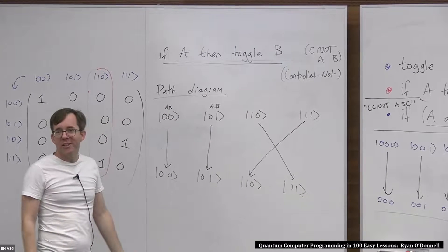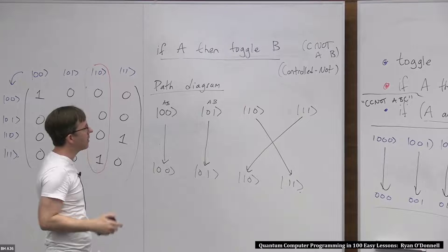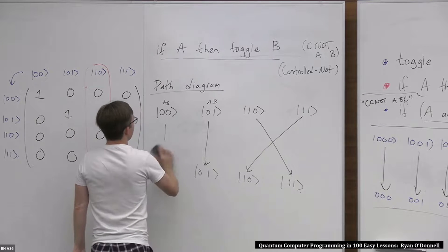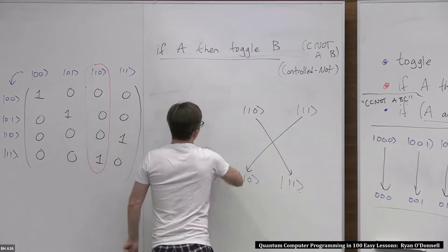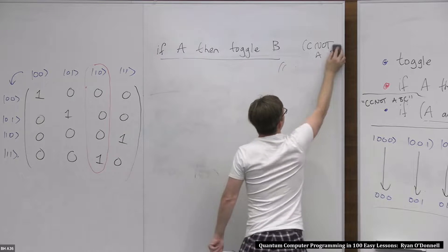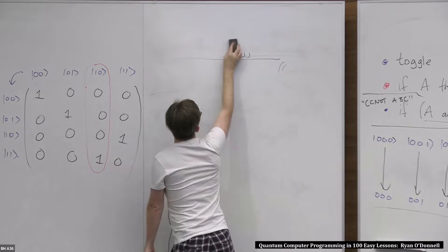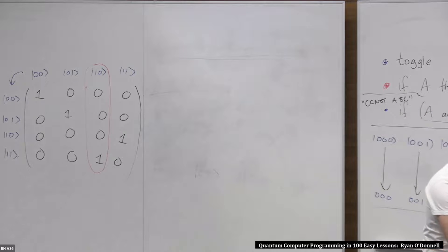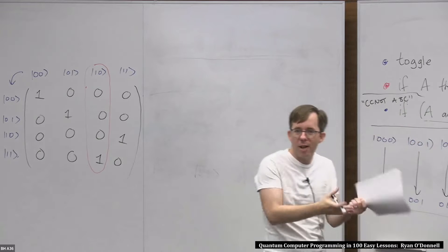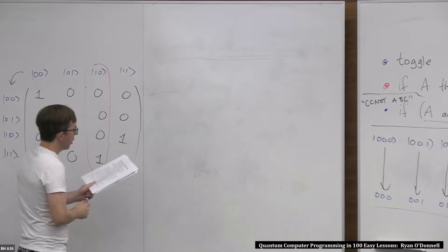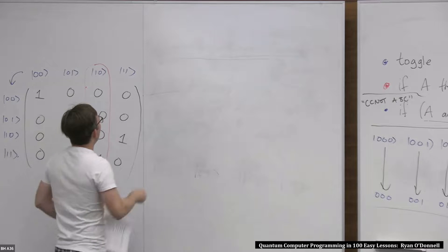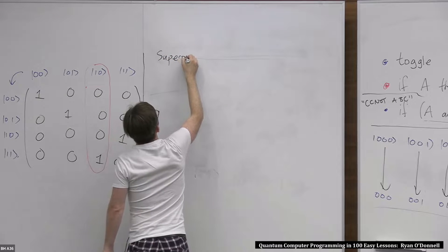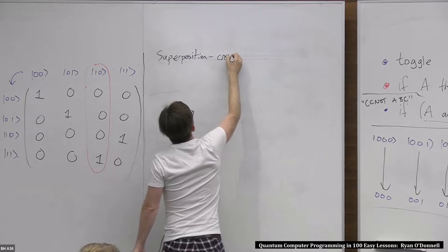So these are the boring instructions in quantum computing — the classical reversible instructions. Now let's talk about the interesting instructions, the exciting instructions: the superposition-creating instructions. I call them that because they don't have the basic-state-in, basic-state-out property. If you give them a basic state, they produce a real superposition — some non-trivial amplitude on zero and some non-trivial amplitude on one, or a basic state. So these are superposition-creating instructions.